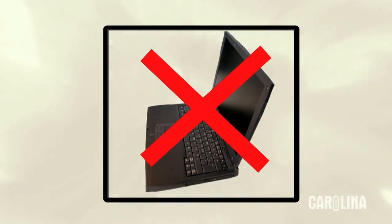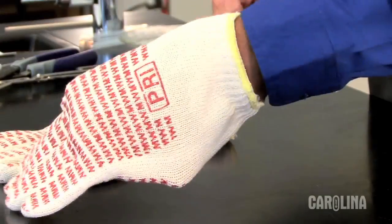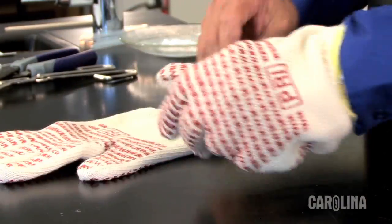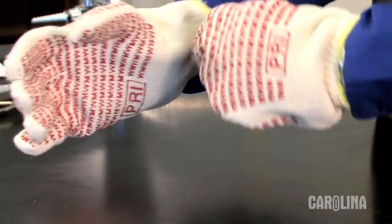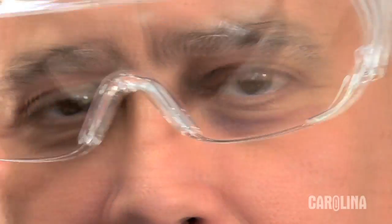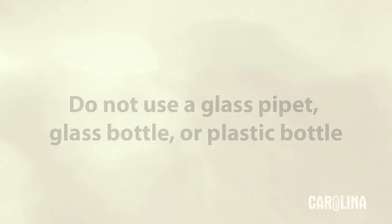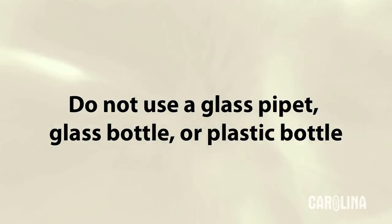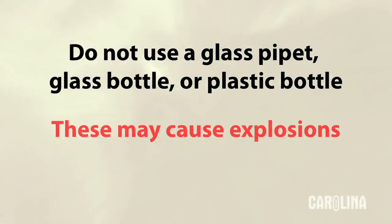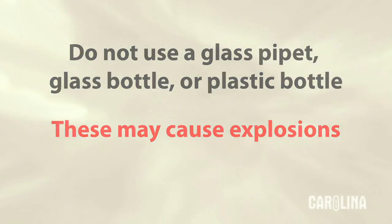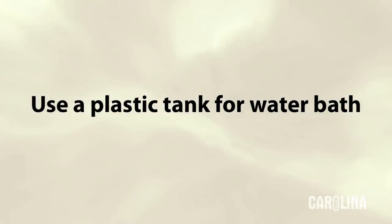Keep any equipment that might be damaged by water away from the setup. Always use insulating gloves when handling dry ice because there's some risk of frostbite if you hold it directly in your hands. Safety goggles should also be worn during the demonstration. Do not use a sealed glass pipette or try to scale up the demonstration using a glass or plastic bottle because of the risk of a serious explosion. Use a plastic tank for the water bath.